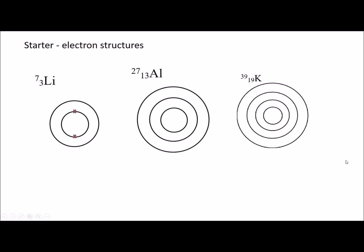So what you should get is two electrons in the first shell for lithium and one electron in the outer shell. For aluminium, you should get two in the first shell, eight in the second shell, and three electrons in the final shell.